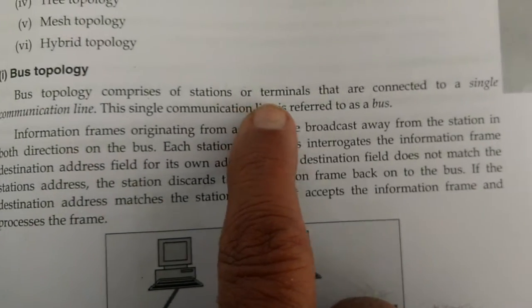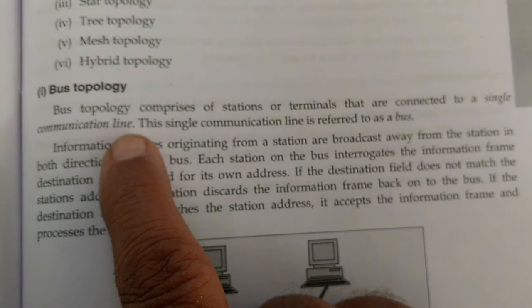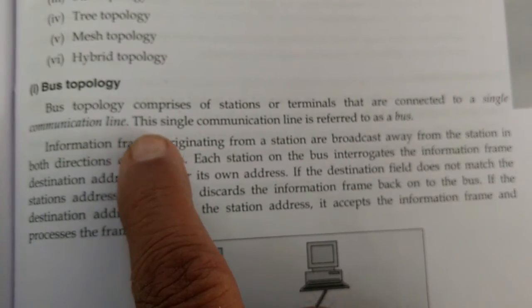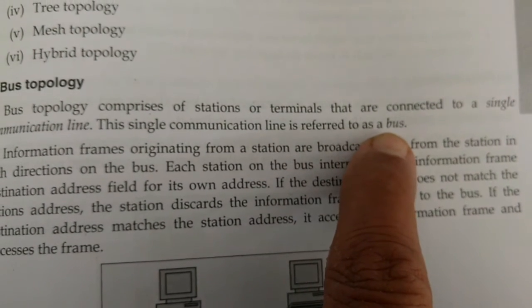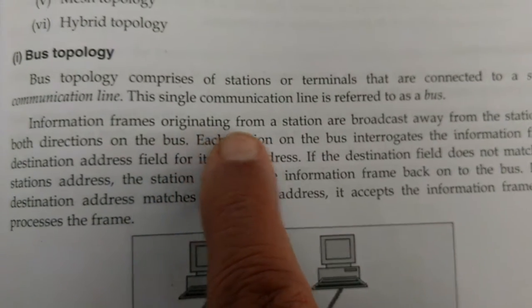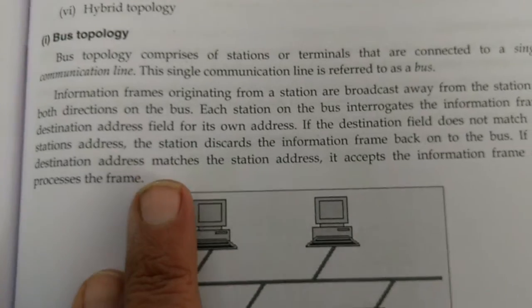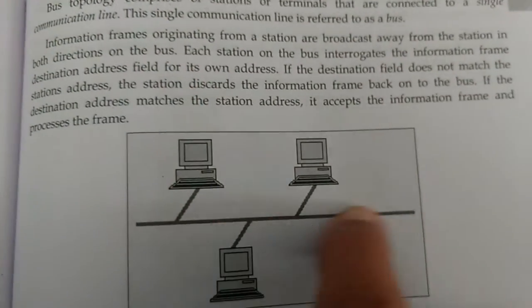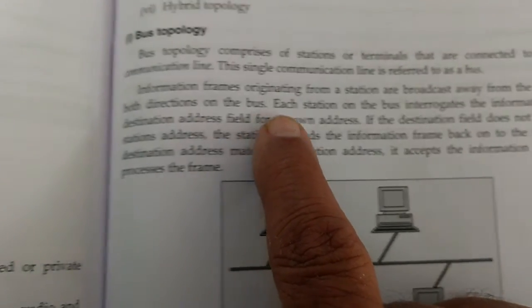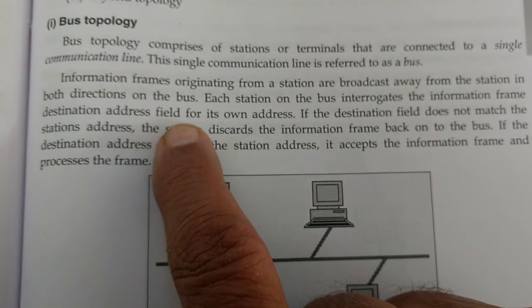Bus topology comprises stations or terminals that are connected to a single communication line. This single communication line is referred to as a bus — just like passengers sitting in a bus. Information frames originating from a station are broadcast away from the station in both directions on the bus.